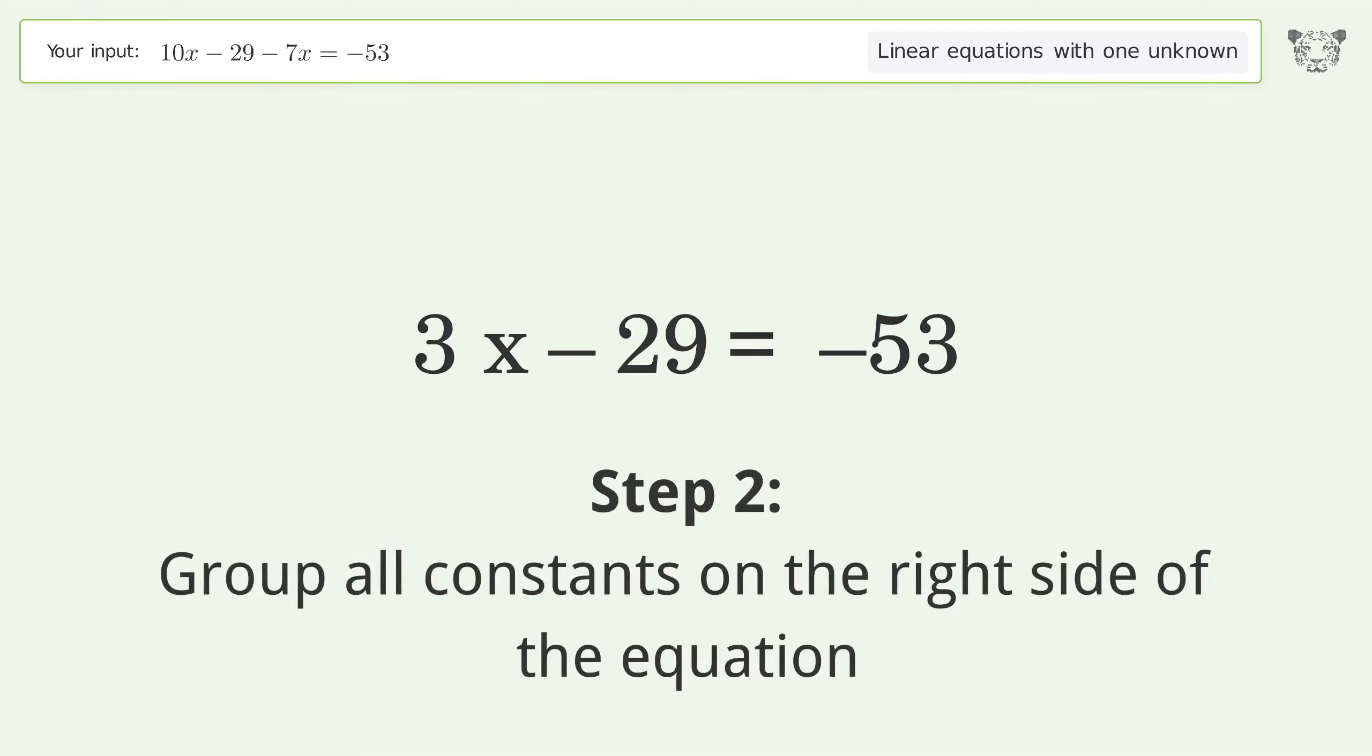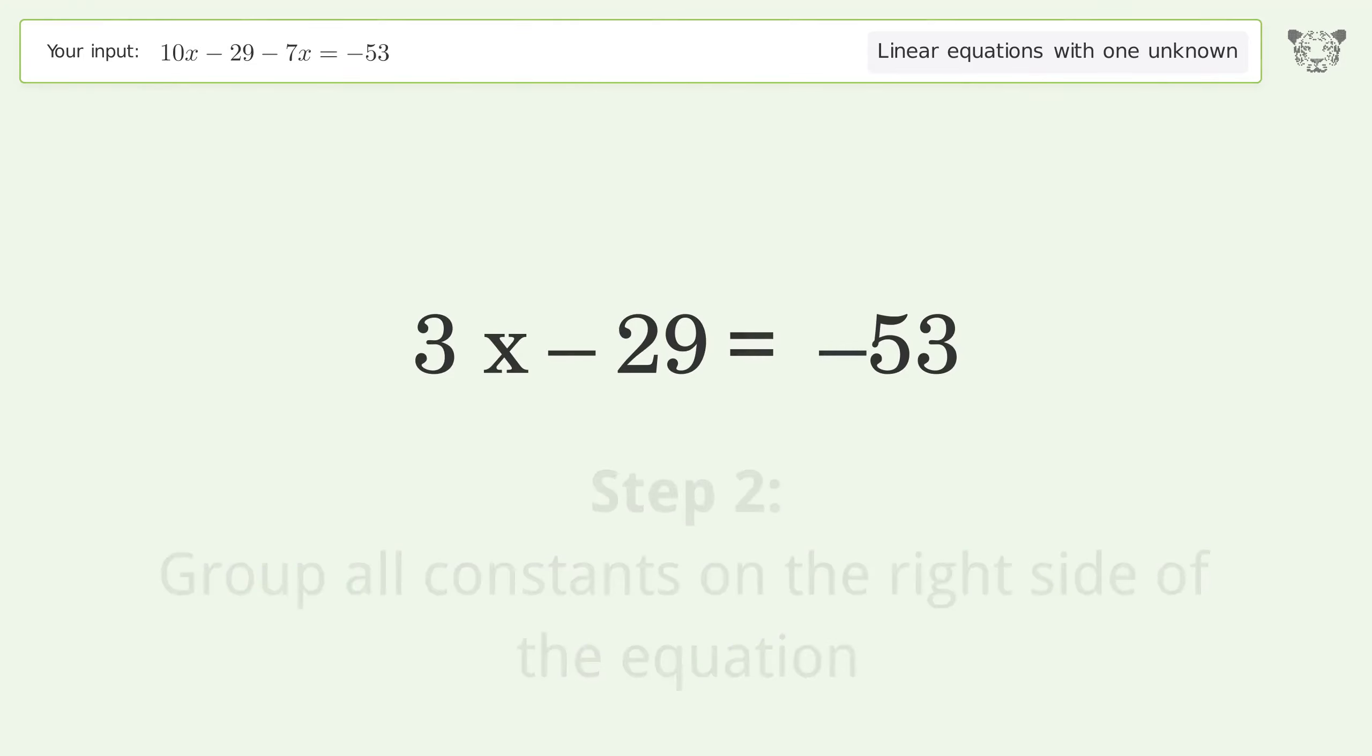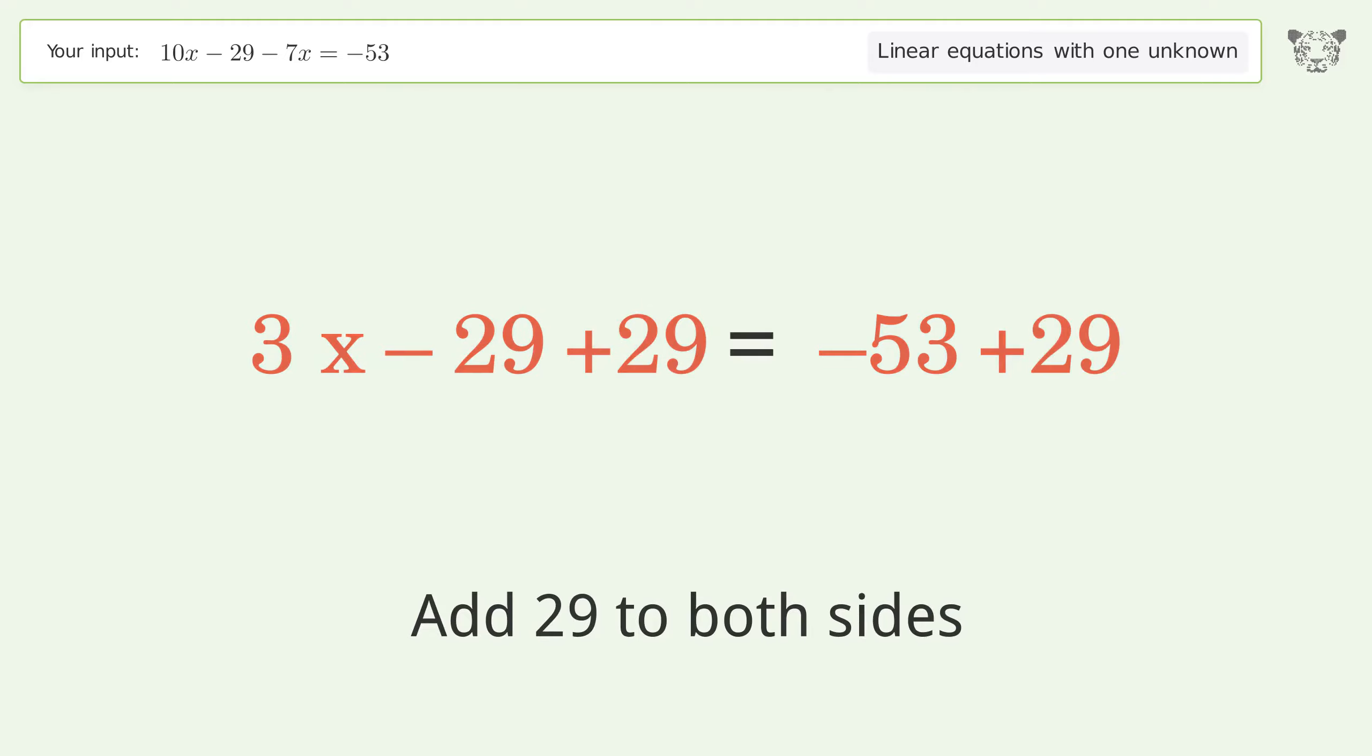Group all constants on the right side of the equation. Add 29 to both sides. Simplify the arithmetic.